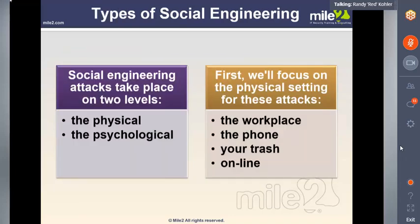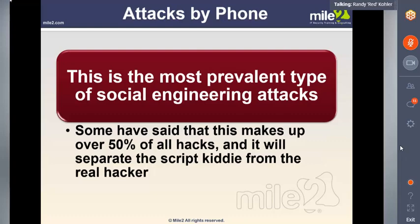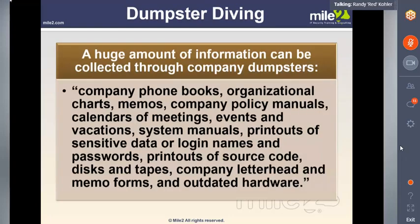Types of social engineering include physical and psychological. Physical would be the workplace, the phone, the trash — called dumpster diving — and online through emails and phishing attacks. The phone can be very successful. Dumpster diving allows us to go into the dumpster of the organization and grab everything we can. Even if the dumpster is locked with a chain, all I need to do is put my hand or my phone in there and take some pictures to get valid information. You've got to have different layers of protection because people throw stuff away not realizing the value of the data.